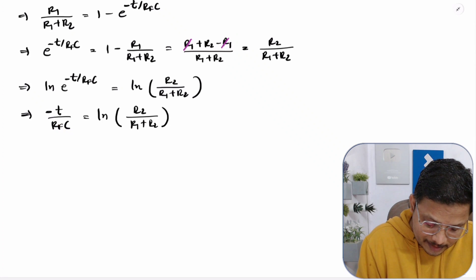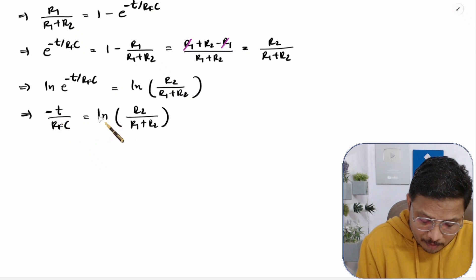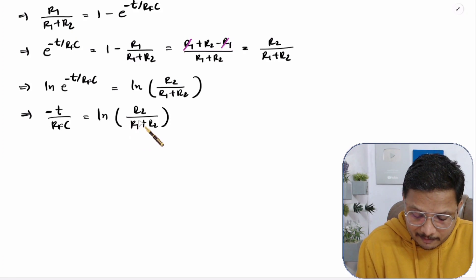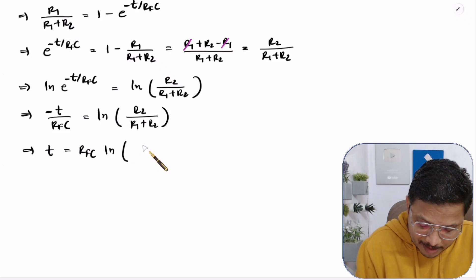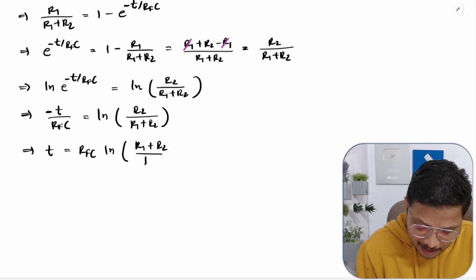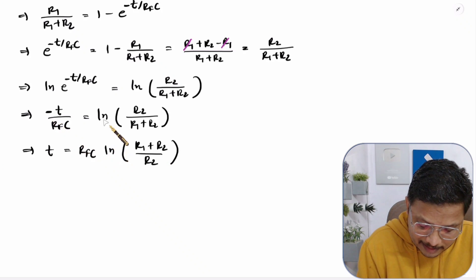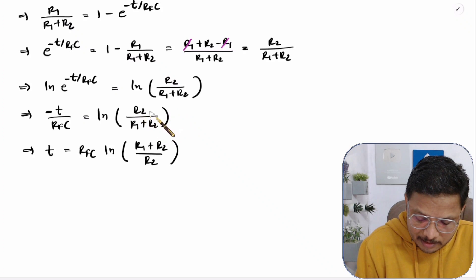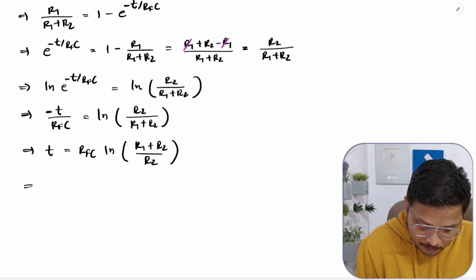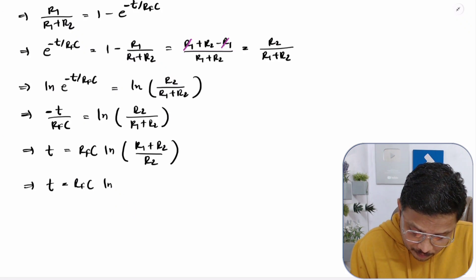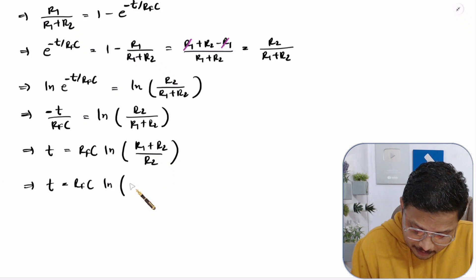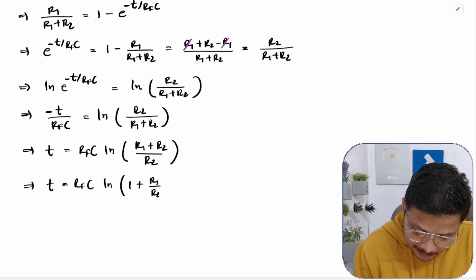Now we have a negative sign. If we multiply the negative sign through, the natural log has the property of reversing the fraction. So: T = RF·C · ln((R1 + R2) / R2). Taking the negative sign inside means the power becomes −1, which reverses the fraction. Therefore: T = RF·C · ln(1 + R1/R2).